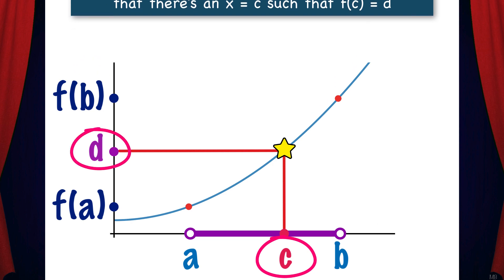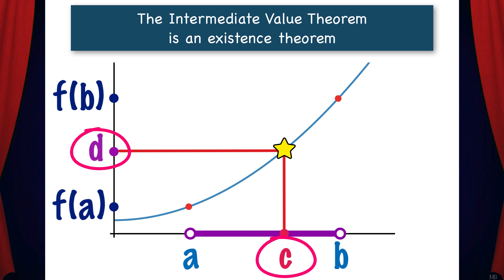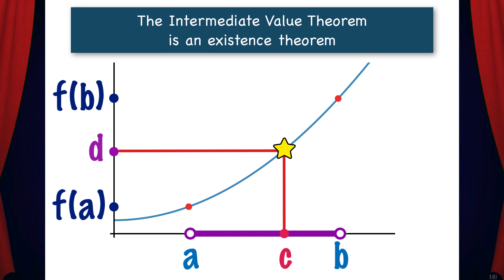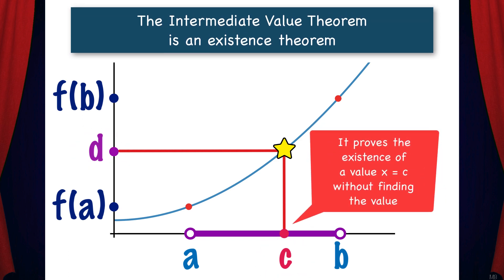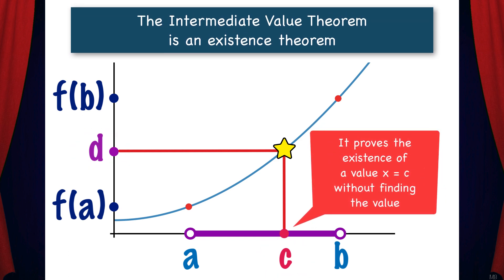Something to note here is that the Intermediate Value Theorem is an Existence Theorem. It proves the existence of a value without actually finding what that value is. In other words, it proves the existence of a value x equals c without finding that value.